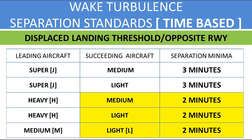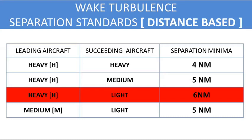Another table is used for applying time-based wake turbulence separation between arrivals and departures in the case of displaced threshold or opposite runway departure. A further table shows the wake turbulence separation applied to all aircraft in all phases of flight while under radar control — these distances apply when one aircraft is operating directly behind another, or crossing behind at the same level and up to 1,000 feet below.